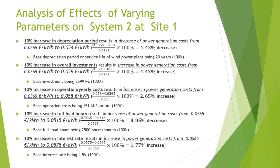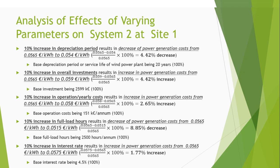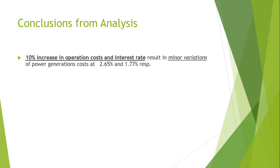Similarly, a 10% increase in interest rate will result in an increase in power generation cost of around 1.77%. In conclusion, the 10% increase in operational cost and interest rates result in minor variation of the power generation cost at 2.65% and 1.77% respectively.